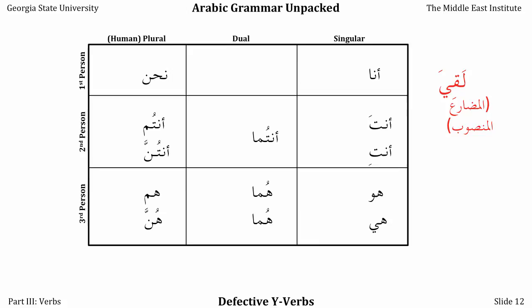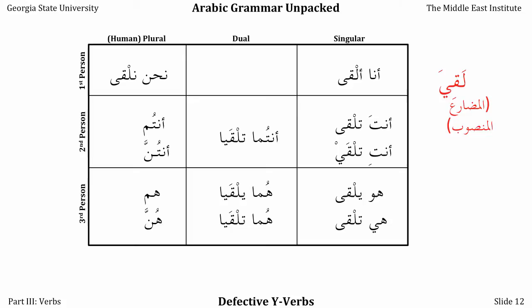If we look at the mudaari' mansoob, things don't change very much: alqa, talqa, now talqayn instead of talqayn, but that follows the pattern you should be accustomed to at this point. Yalqa, talqa — the dual forms lose their nuns but otherwise remain the same. Nahnu nalqa doesn't change. Antum talqaw — again, we lose our nuns, but the pattern does not change. Same goes with the all-female forms and the hum form: hum yalqaw.